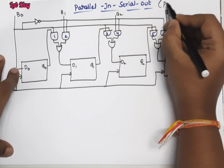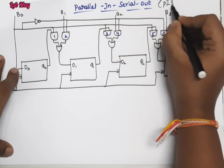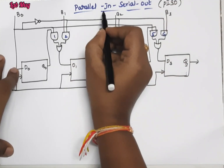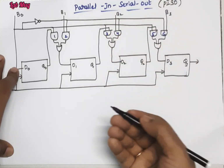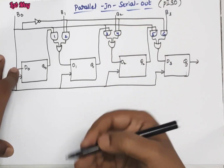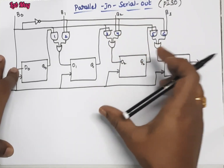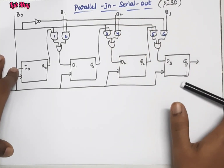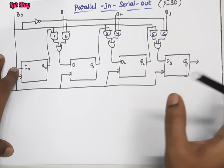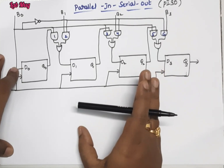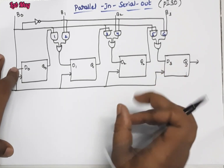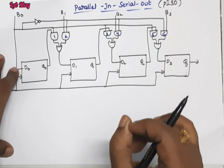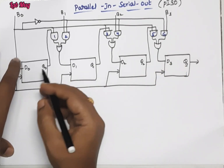So, what is parallel in serial out shift register? That is, we are taking the input parallel, but we are getting the output serially. We already saw in the previous two types what serial and parallel mean.